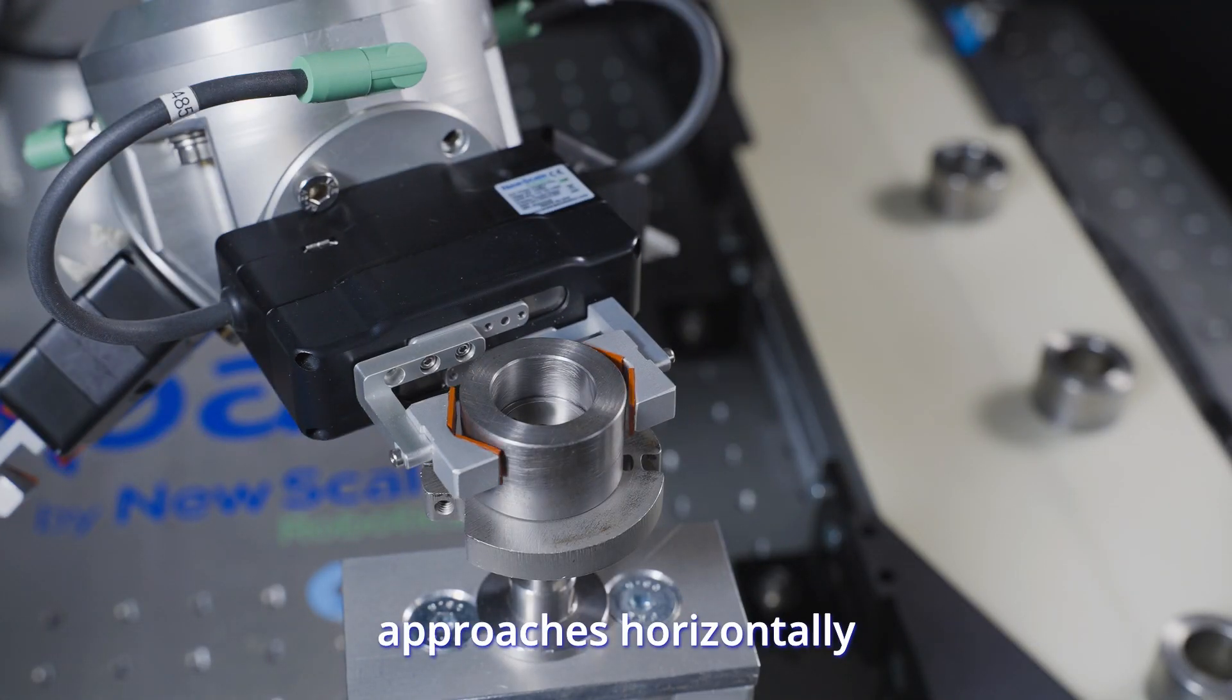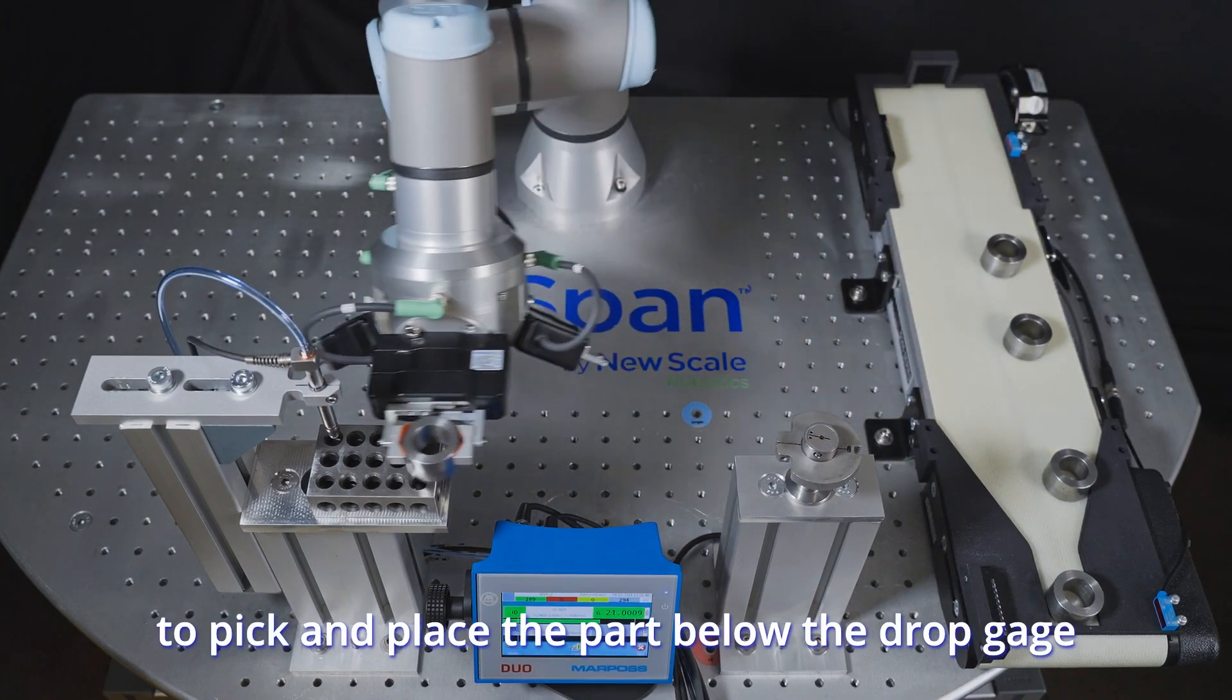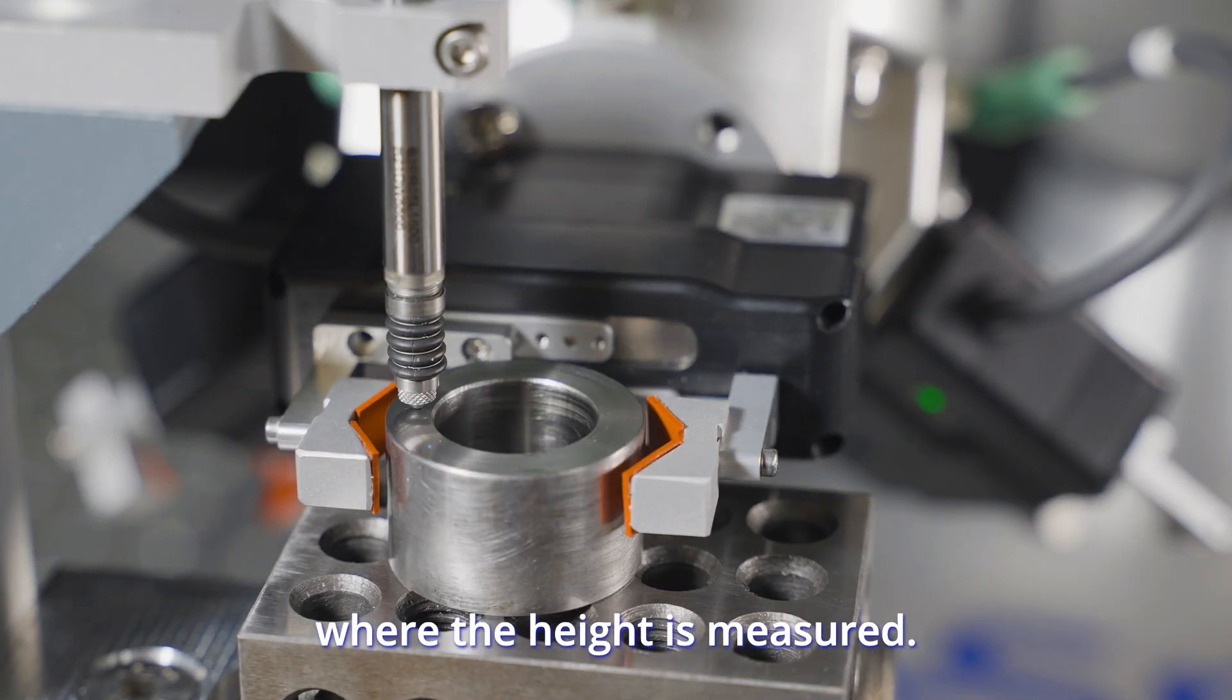The second gripper caliper approaches horizontally to pick and place the part below the drop gauge where the height is measured.